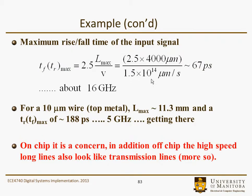The maximum rise and fall time for the input signal would be on the order of 67 picoseconds, which certainly could be considerably less than that — so you'd be considering it a transmission line. For a 10 micron wide wire, the top-level metal L_max is almost a centimeter long, and the rise and fall time would be on the order of 188 picoseconds or considerably less — so in the 5 GHz kind of regime. The point is that on-chip, it's a concern; and in addition to off-chip where high-speed long lines also look like transmission lines, it's probably even more of a concern.